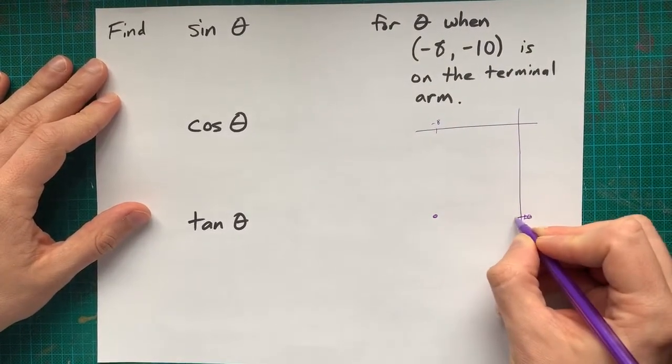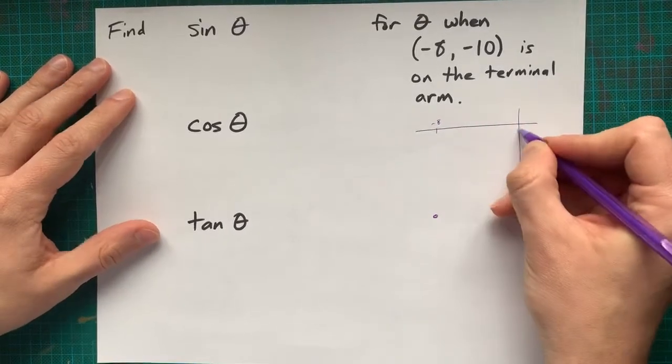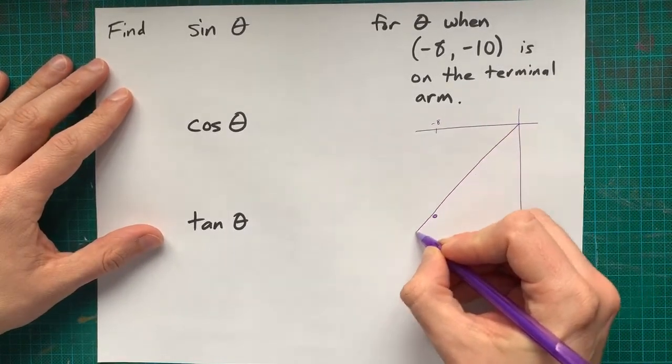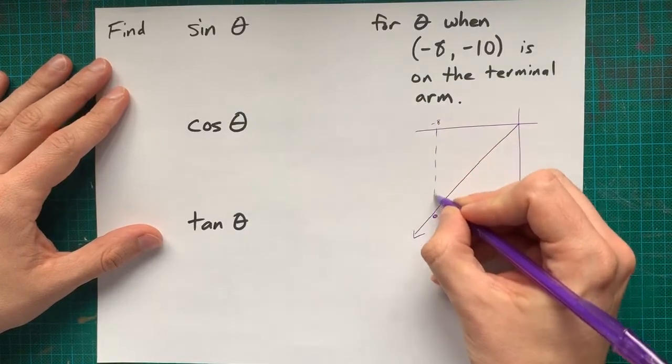It's down here. Oh, well, that kind of looks like a tick mark. That's negative 10 on the y. So my terminal arm goes through there. But you know what matters more?